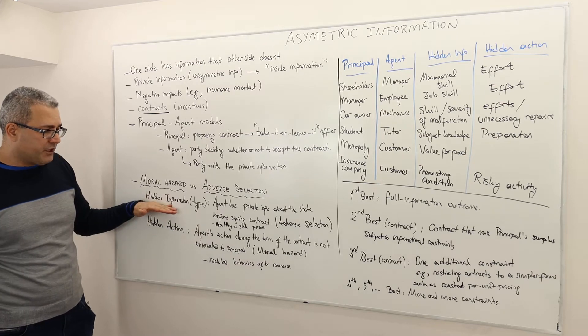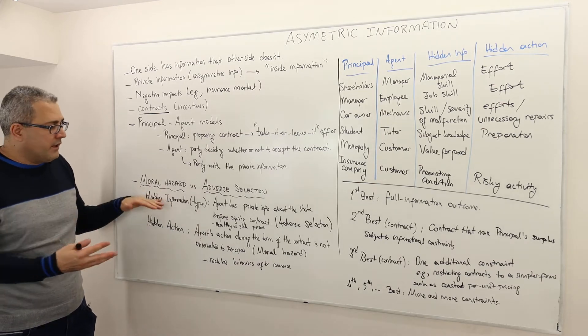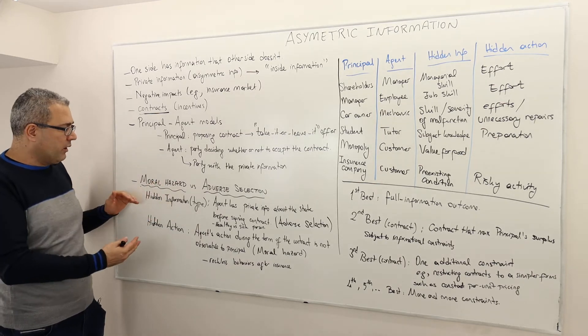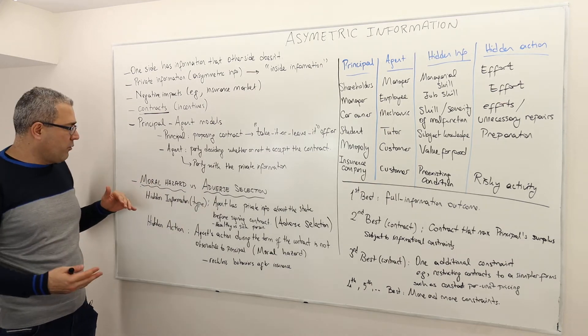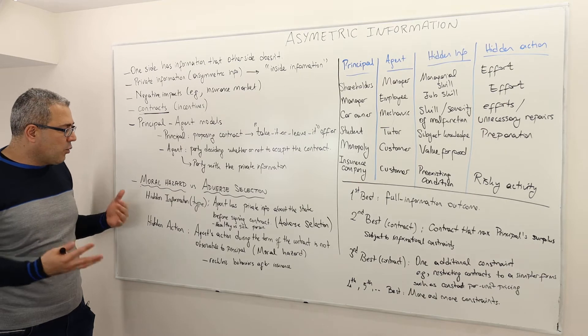So the hidden information, the equivalent, we call it adverse selection. Hidden action is also known as moral hazard. So what is the idea?